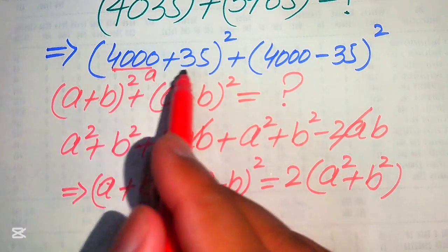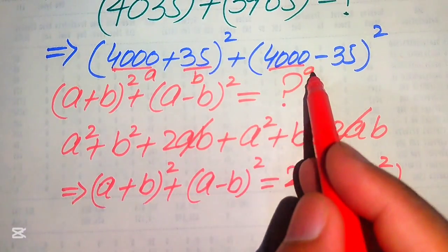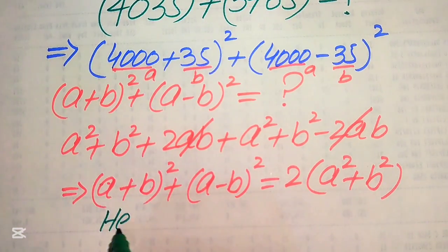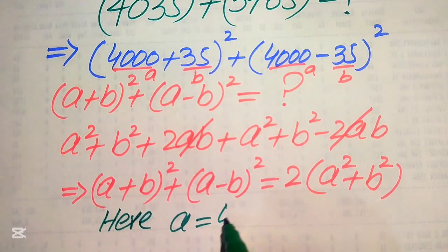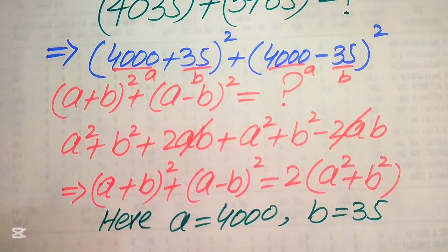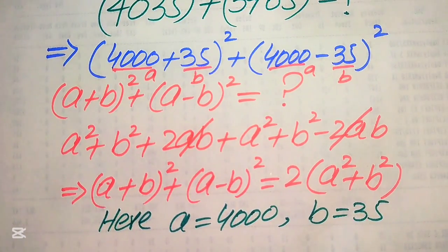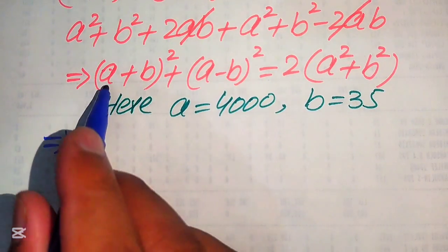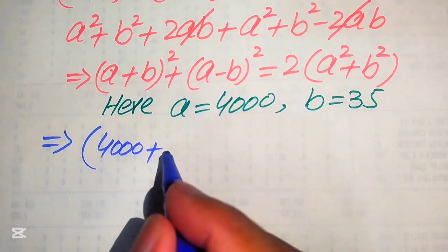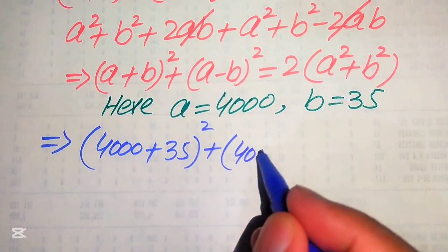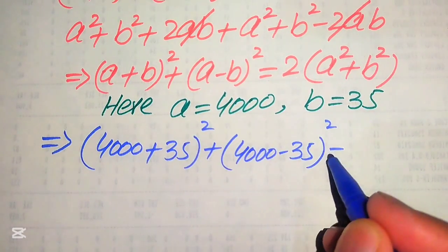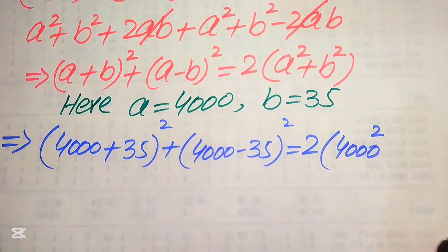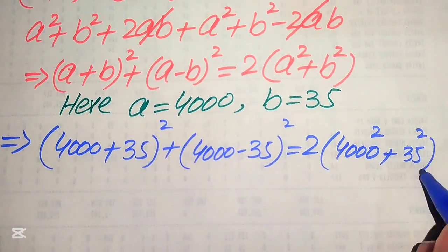Here we have a = 4000 and b = 35, which is the same in both cases. So we apply this formula. According to the given question, a = 4000 and b = 35. Substituting these two values, our equation becomes 2 times of (4000² + 35²).